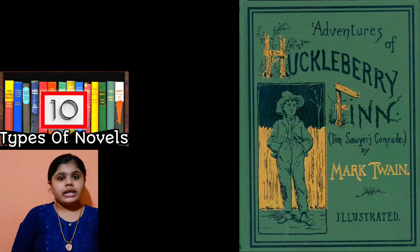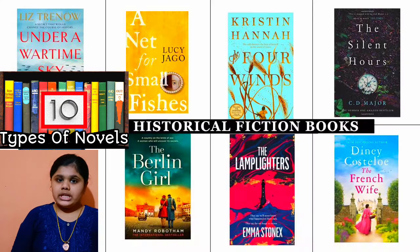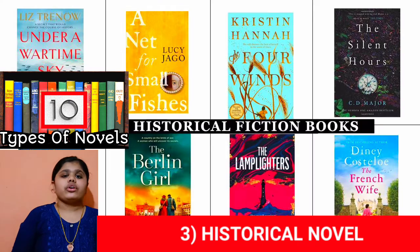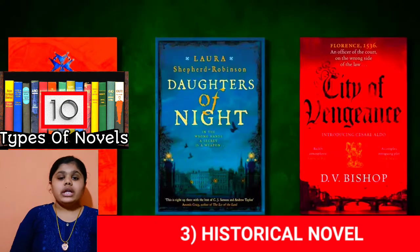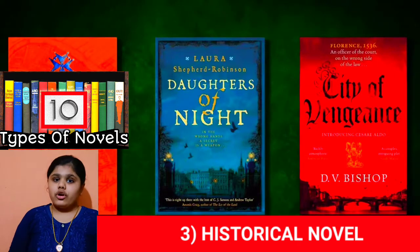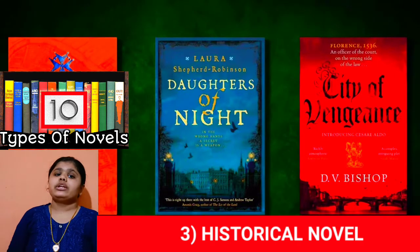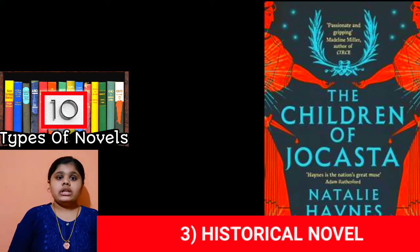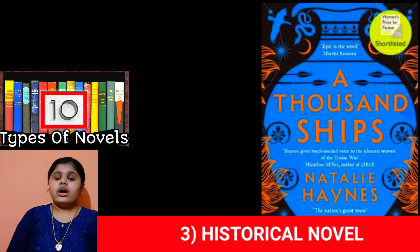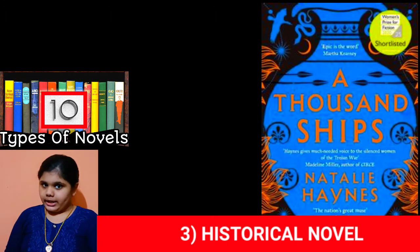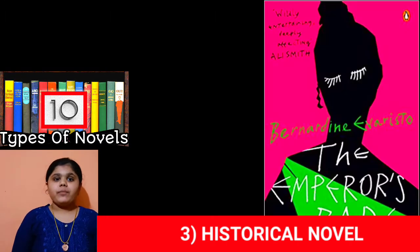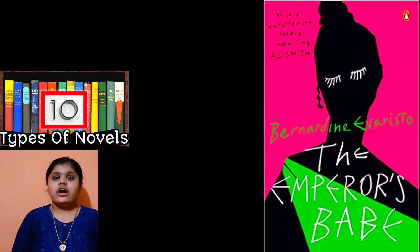The third type of novel is the historical novel. The historical novel is a novel set in a period earlier than that of the writing. The fourth type of novel is the epistolary novel.